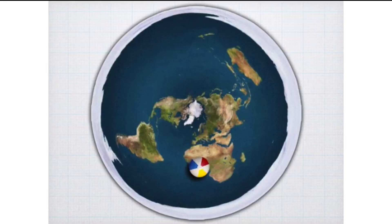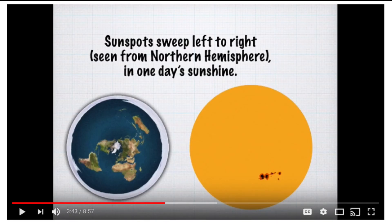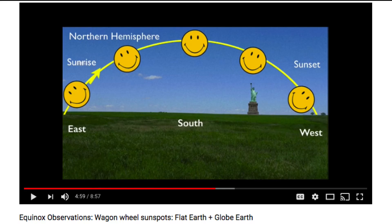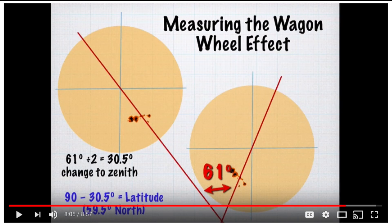Number six: on the flat earth model, if you move a beach ball in the pattern that the sun moves above the equator, you can see how the colored panels sweep across relative to an observer — concluding that sunspots sweep left to right. Whereas analyzing it from a globe perspective, since an observer stands on the sloping surface of the globe, they see the sun at different orientations. Thus the angles change in a rotational fashion, not a sweeping fashion — what we call the wagon wheel effect. You can actually measure the angle that the sunspots rotate.